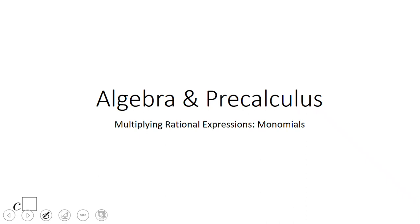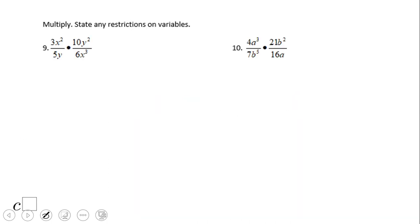Welcome back on C Squared. In this video clip we're going to look at how to multiply rational expressions. We're going to look at monomials. These are monomials here, right? 3x squared is a monomial over 5, which is a monomial, times 10y squared, which is a monomial, over 6x cubed, which is a monomial.